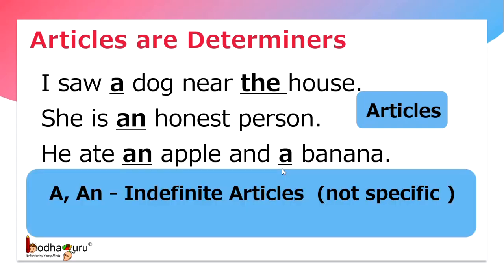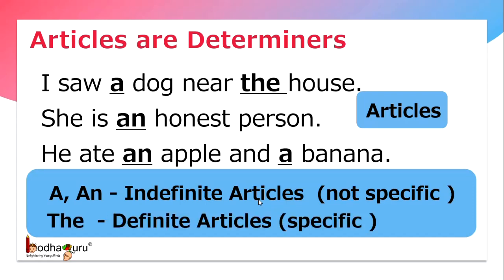So, 'a' and 'an' are indefinite articles — that is, they do not talk about specific nouns. Whereas 'the' is the definite article, as it talks about a specific noun.